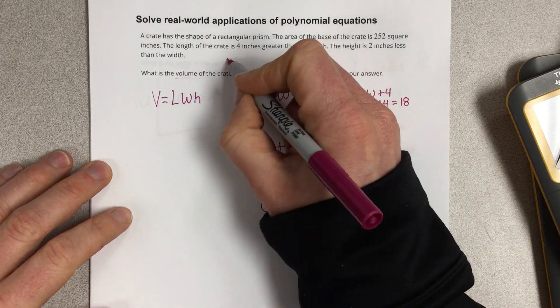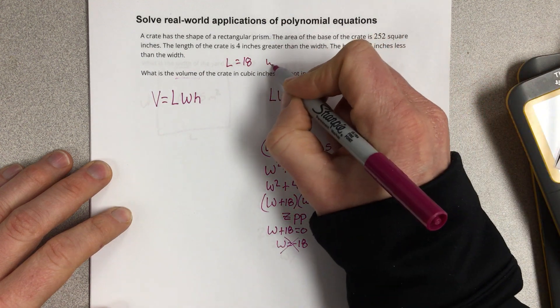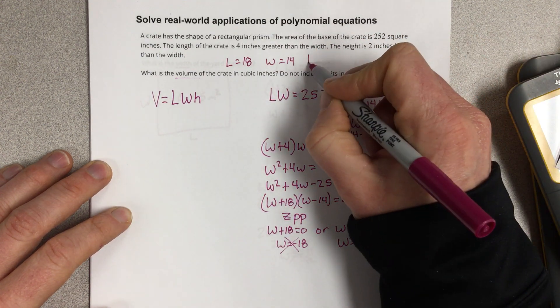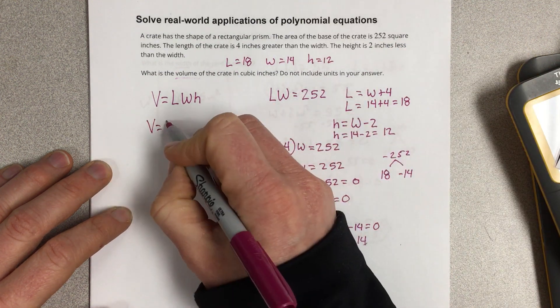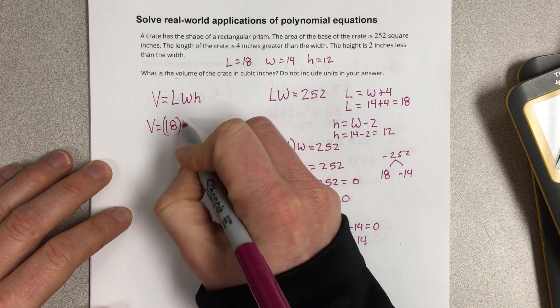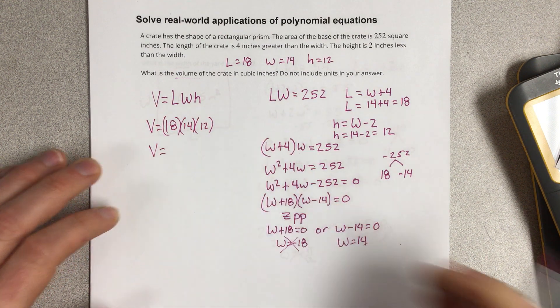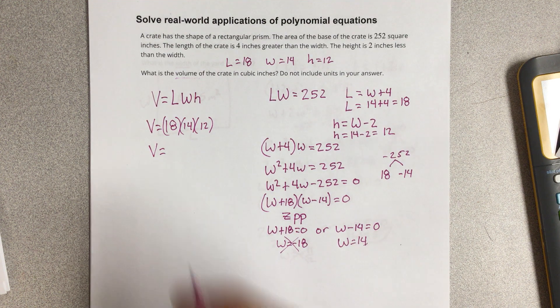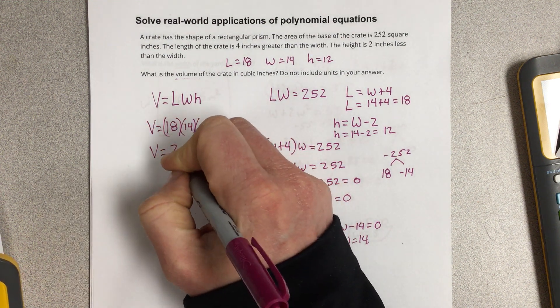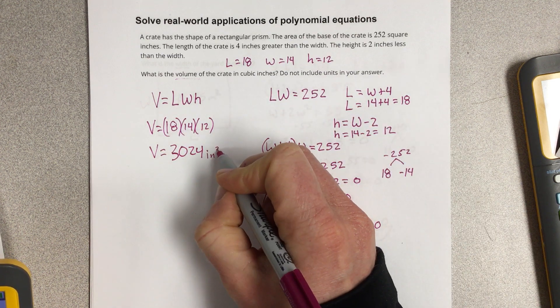So I have length, which is 18. I have width, which is 14. And I have height, which is 12. So I can take and multiply those together. 18 times 14 times 12. And that tells you the volume is 3024 cubic inches.